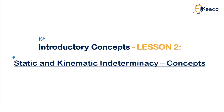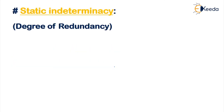In the previous chapter you already learned how to identify a determinate and an indeterminate structure. Now, indeterminate structures are basically of two types — it can be statically indeterminate or it can be kinematically indeterminate. Let's see them one by one. First, let us see the definition of static indeterminacy. This is also called the degree of redundancy.